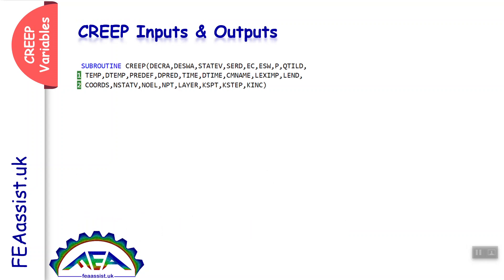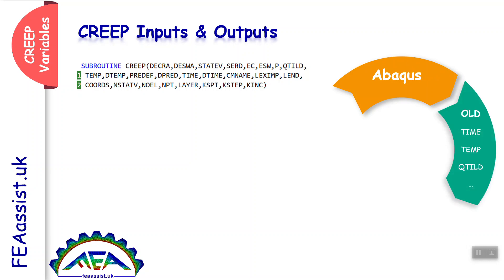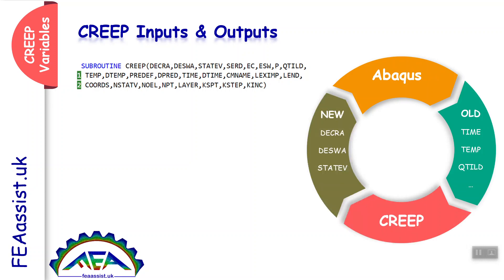CRIP subroutines have some variables — some inputs and some outputs. Some variables are inputs from Abacus, and in CRIP subroutines we do some calculations on them, process them, and return new values to Abacus. Abacus transfers variables — time, temperature, deviatoric stress — into the CRIP subroutine. In CRIP, we define the CRIP strains or swelling strains and state variables, then return them back to Abacus.